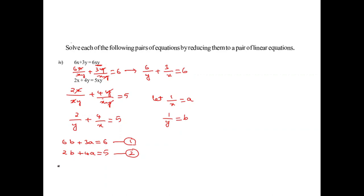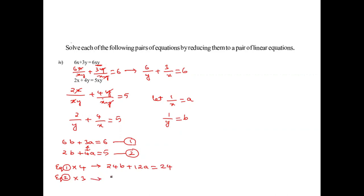Multiplying equation 1 by 4 gives 24B plus 12A equals 24. Multiplying equation 2 by 3 gives 6B plus 12A equals 15. Now subtracting: 12A cancels, leaving 18B equals 9.